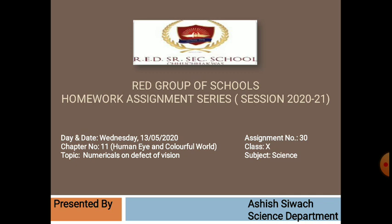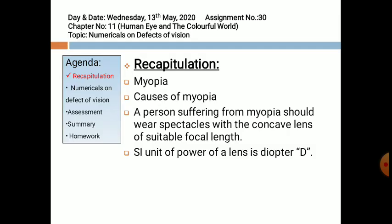First we will recapitulate these defects. First one is myopia. The defect of human eye in which the person can see nearby objects clearly but is unable to see distant objects clearly and distinctly is known as myopia. It is also known as nearsightedness. The light rays after passing through the eye lens meet in front of the retina, as you can see in the figure.